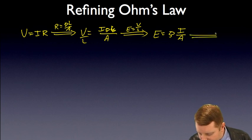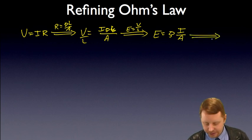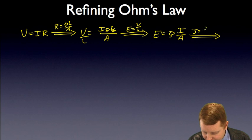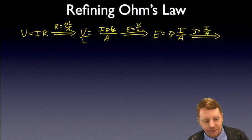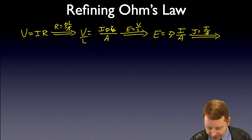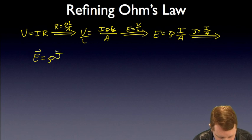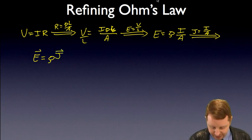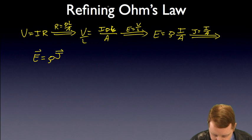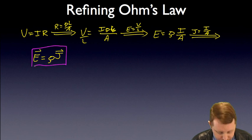But, again, for a uniform object like this, our current density is going to be the electrical current divided by the area. So, in this case, I can then write that the electric field is equal to the resistivity times our current density vector. So, a way of relating all of these different items. E equals rho J.